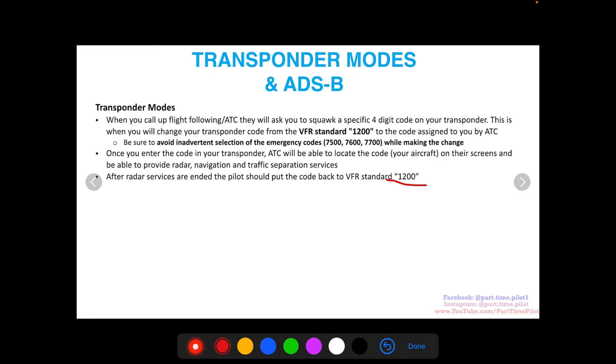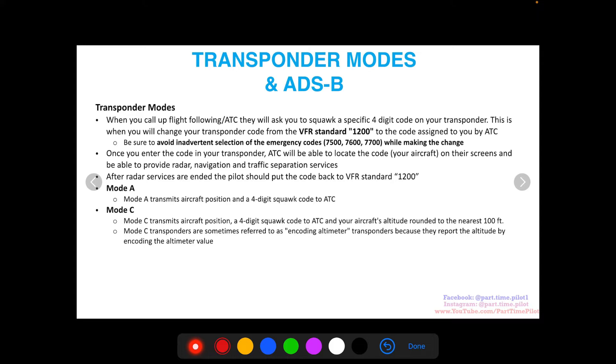Mode A transmits aircraft position with a four-digit squawk code to ATC. Mode C transmits the aircraft position, four-digit squawk code, and your aircraft's altitude rounded to the nearest 100 feet. Mode C transponders are sometimes referred to as encoding altimeter transponders because they encode the altimeter value into a signal broadcast from your transponder antenna.